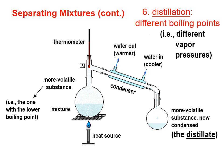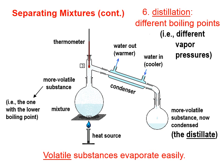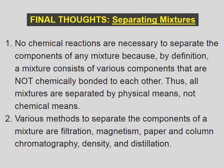That will have successfully separated the more from the less volatile substance. A vocabulary term for AP chemistry students: the distillate — or distillate, I've heard it pronounced both ways — is the more volatile substance. Final thoughts on separating mixtures: one, no chemical reactions are necessary to separate the components of any mixture because a mixture consists of components that are not chemically bonded to each other. Thus, all mixtures are separated by physical means, not chemical means. Two, various methods to separate the components of a mixture are filtration, magnetism, paper and column chromatography, density, and distillation.